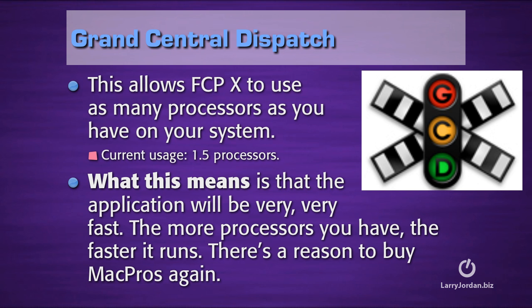Grand Central Dispatch allows Final Cut Pro X to use as many processors as you have on your system. Final Cut Pro 7 currently uses 1.5 processors. What this means is that the application will be very, very fast — the more processors you have, the faster it will run. Finally, we've got a reason to buy Mac Pros again, and there's a reason to buy computers with more processors rather than less.